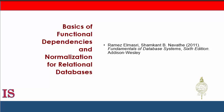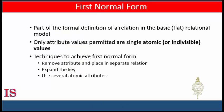First normal form is now considered to be part of the formal definition of a relation in the basic relational model, or flat relational model. Historically it was designed to disallow multi-valued attributes and composite attributes and their combinations. It states that the domain of an attribute must include only atomic values.